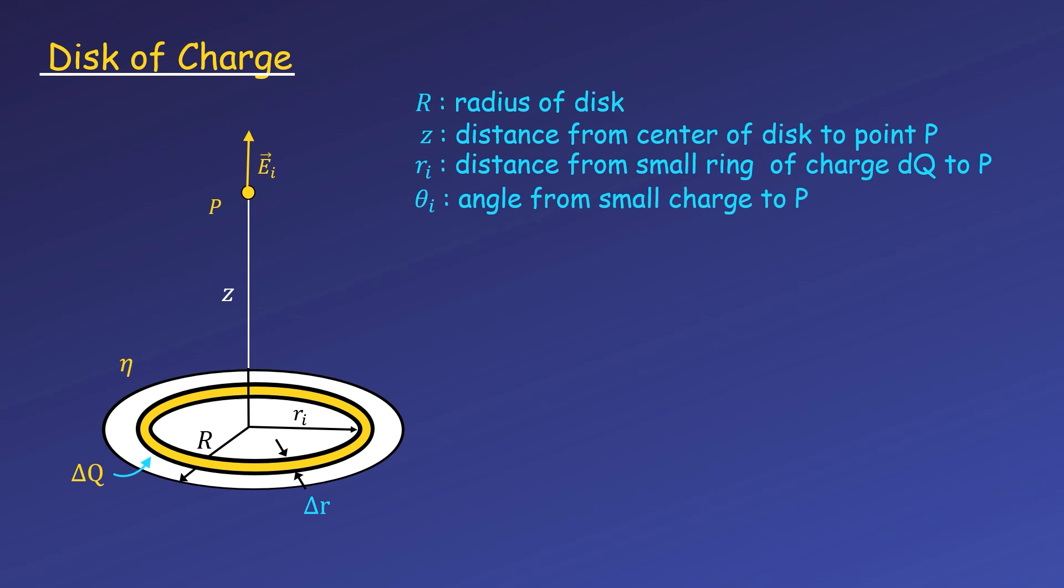When we looked at a ring of charge in the previous video, the x and y components of electric field canceled out, leaving only the z component. The same is true here. A disk can be made by stacking many rings of increasing radius from 0 to R, or we can imagine taking a ring and stretching it into a disk. For this reason, we can use the result for a ring of charge that we obtained in the last video.